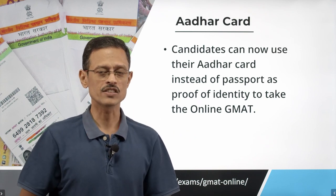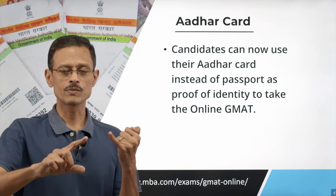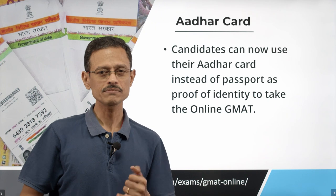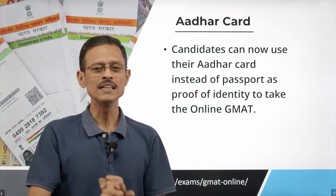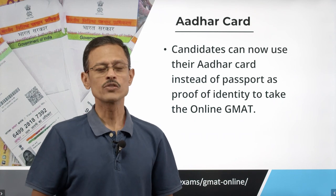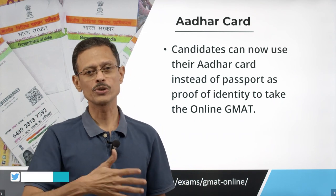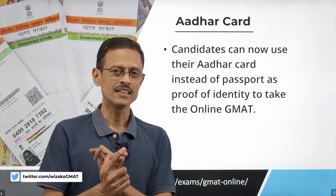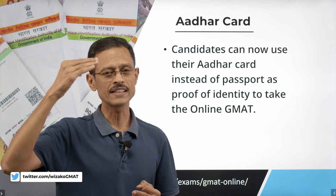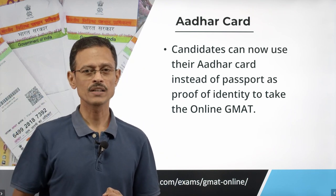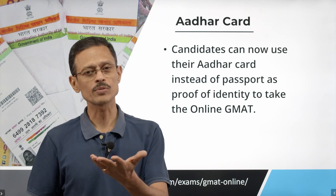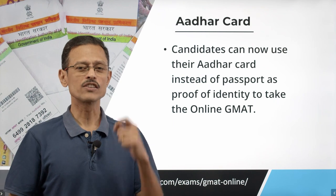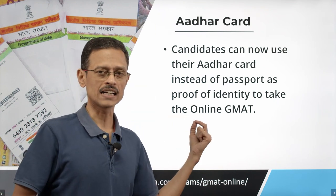To summarize all the welcome features: First, AWA is made available from April 8th, putting the online test on par with the test center based one. Second, you get a score preview at the end of the test — no waiting a week or 10 days. Third, you get the same three section order choices as the test center based version. Fourth, optional breaks are now 8 minutes instead of 5. Fifth, proof of identity can now be an Aadhaar card, not just a passport.